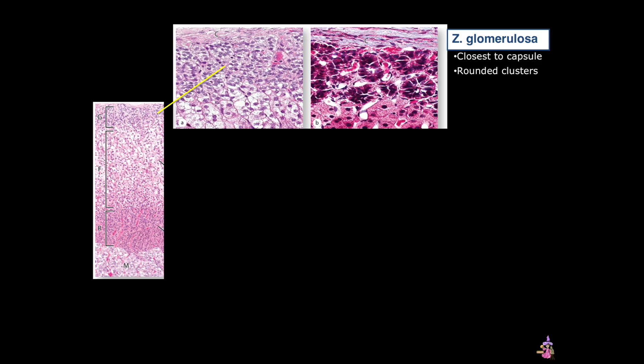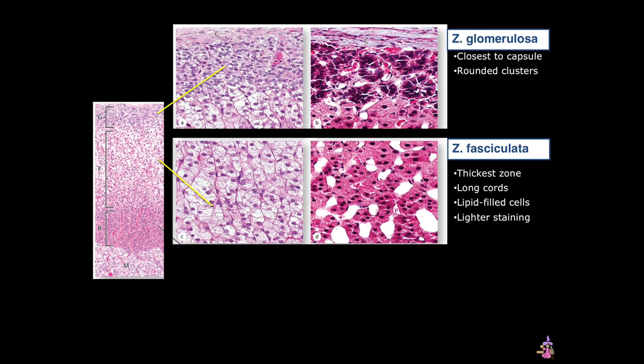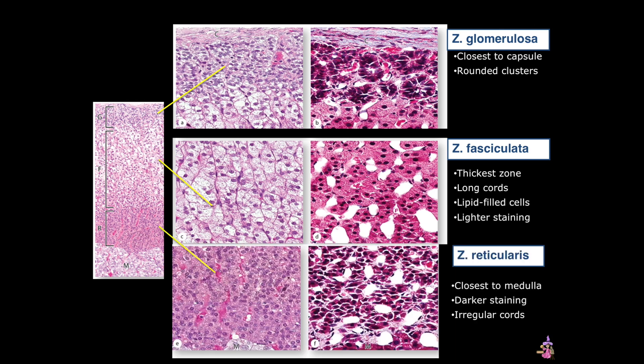Now let's review what we just learned. The zona glomerulosa is closest to the capsule, and you can see the whorls quite well in the right image. The middle zone is the zona fasciculata — it's the thickest zone, has long cords and very obvious lipid-filled cells, and is often lighter staining. And finally, we see the zone closest to the medulla, the zona reticularis, which is darker staining.